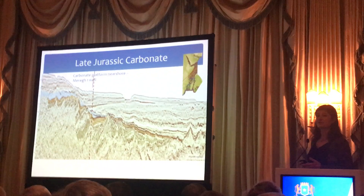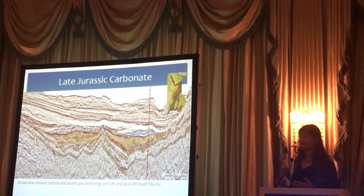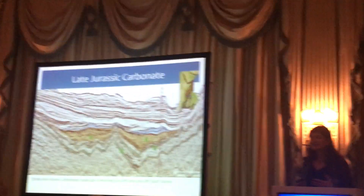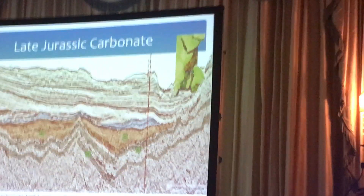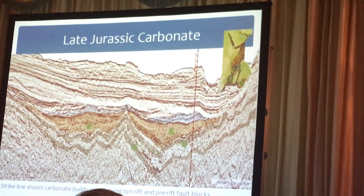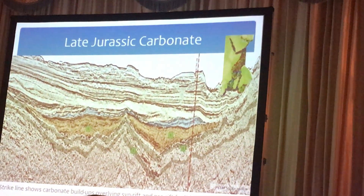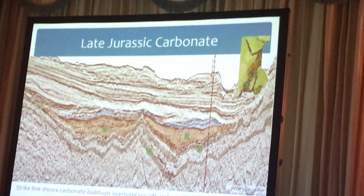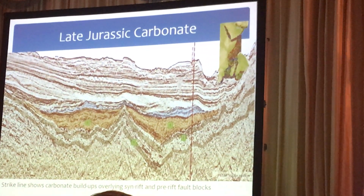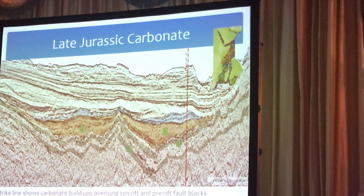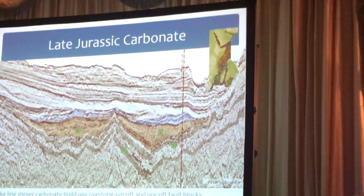I'm going to show you the intersecting lines so you can see how we came up with the conclusion that that was a carbonate buildup. This is an intersecting strike line — now you can see this really interesting, very extensive carbonate buildup complex, just above the breakup unconformity. The great news is we have a couple of source rock sequences, and we are very confident those source rocks are in place, right below this carbonate complex. I'm also going to show you the resource evaluation we have carried out on that particular carbonate complex.